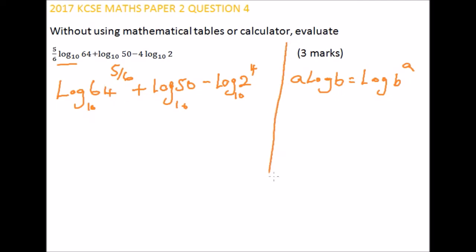Now we also know that 2, that is 64, is the same as 2 to power 6. Therefore, we replace 64 with 2 to power 6 and also apply the first and second rule of logarithm.